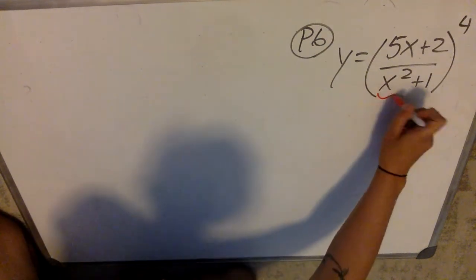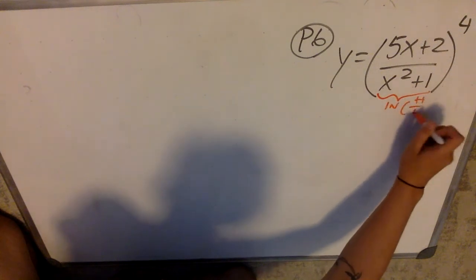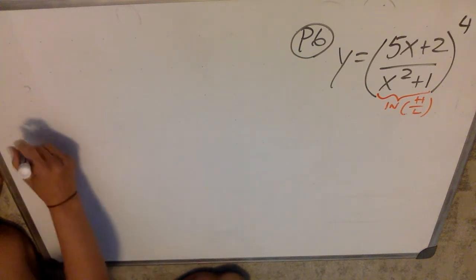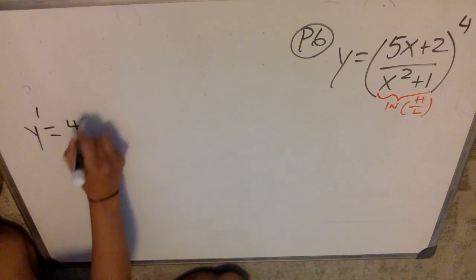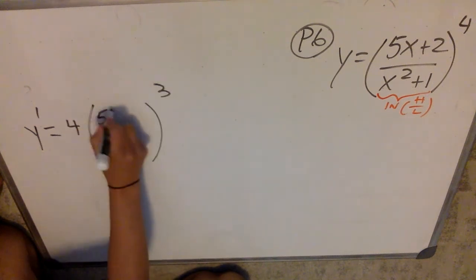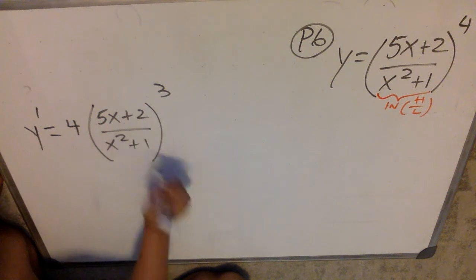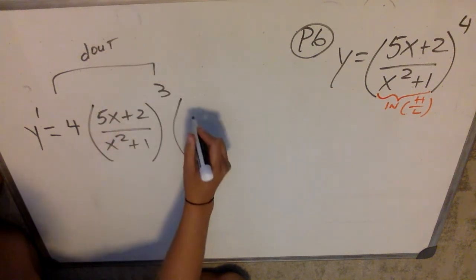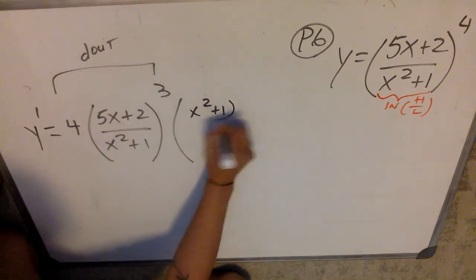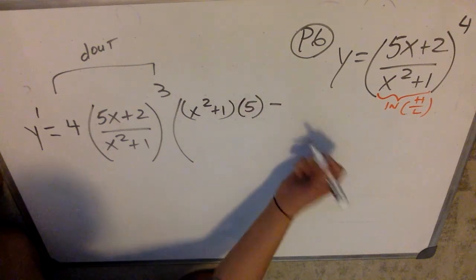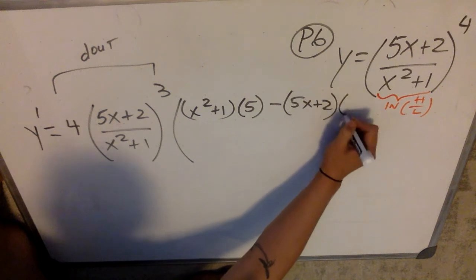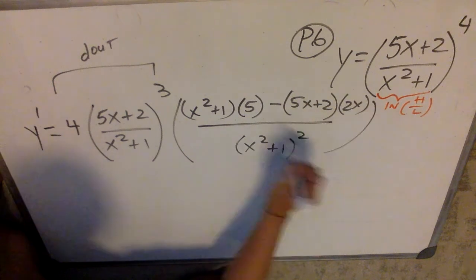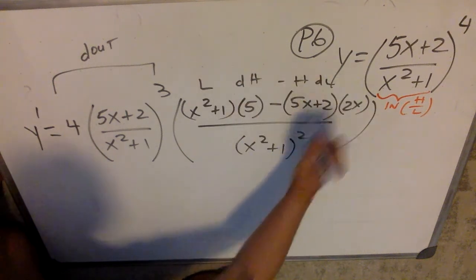All right, here we go. My inside function is a quotient — it has a high over a low — and my outside function is stuff to the 4th. When I find my y prime for P6, the derivative of my outside function is going to be 4 stuff to the 3rd, so that's 4 times (5x+2)/(x²+1) to the 3rd. My d-inside is going to be: low d-high — which is just a 5 — minus high (the 5x+2) times d-low which is 2x, draw the line, and then square the low.